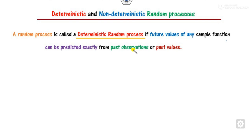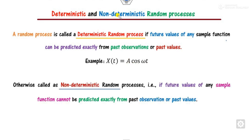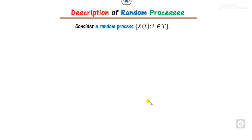What are deterministic and non-deterministic random processes? If the future value can be predicted exactly from the past values, we call it deterministic — as the name suggests, you can determine something from the past. For example, a periodic function allows you to easily compute future values from previous ones. The opposite — where future values cannot be predicted exactly from past values — is called non-deterministic. Stock markets and exchange rates are non-deterministic, as they cannot be predicted from past behavior.